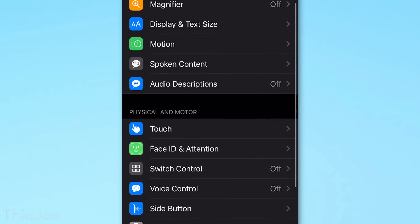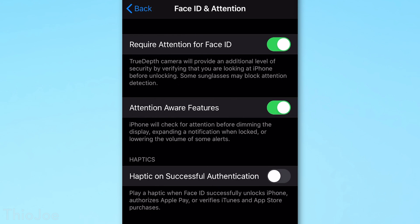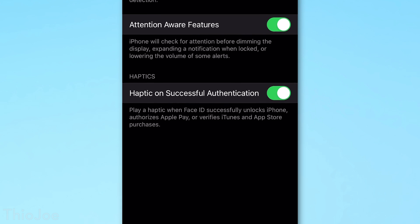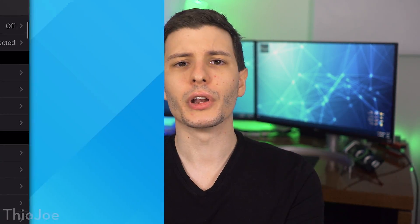Up next, number 2, go to Accessibility, then Face ID and Attention, and look for the option called Haptic on Successful Authentication and enable that. This makes it so when you unlock your phone with Face ID, it gives a tiny haptic feedback — not really a vibration, more of a click feeling. I just like having some physical feedback to know exactly the moment when Face ID unlocks.